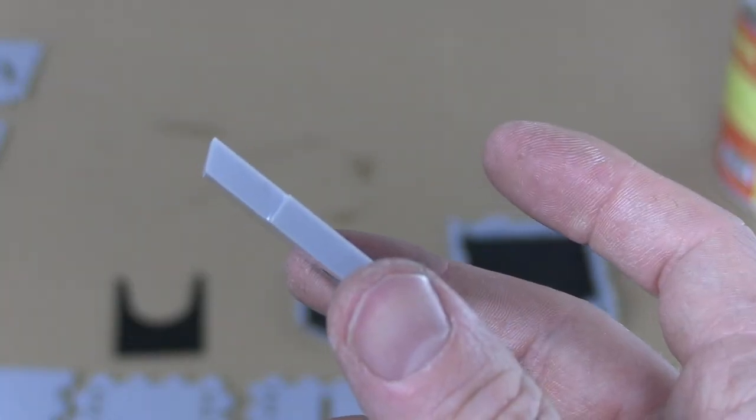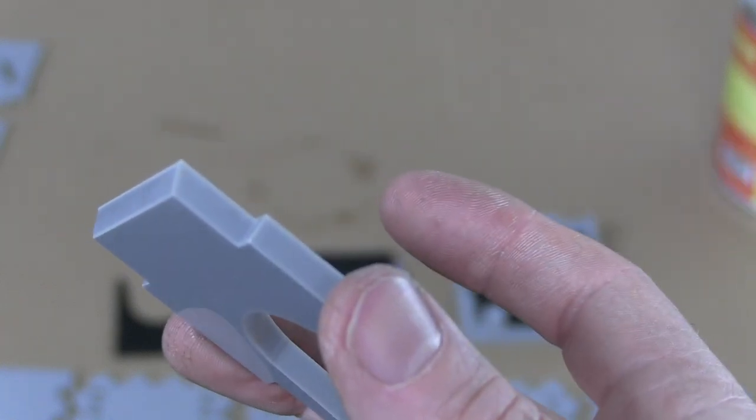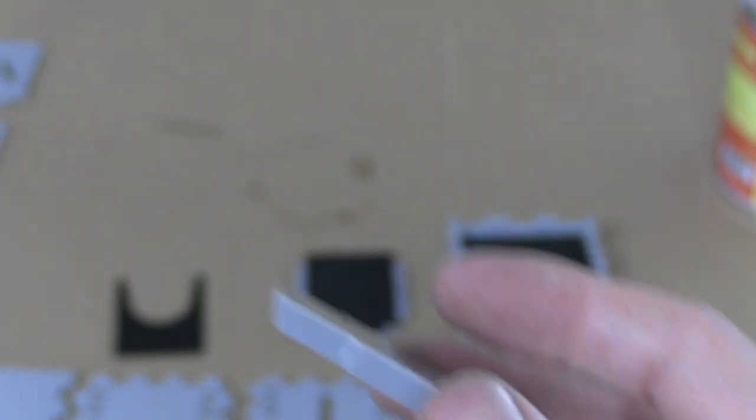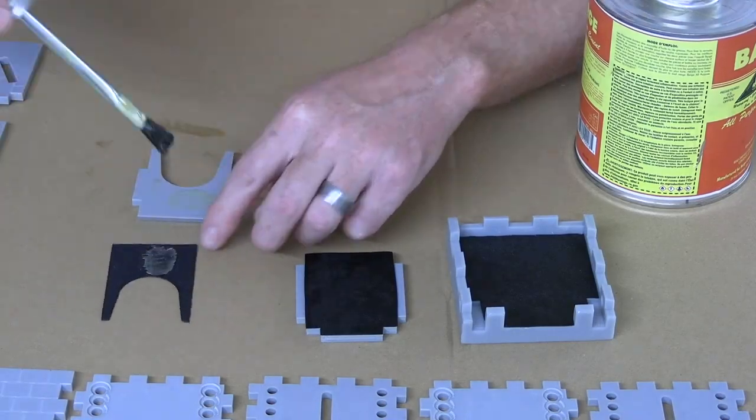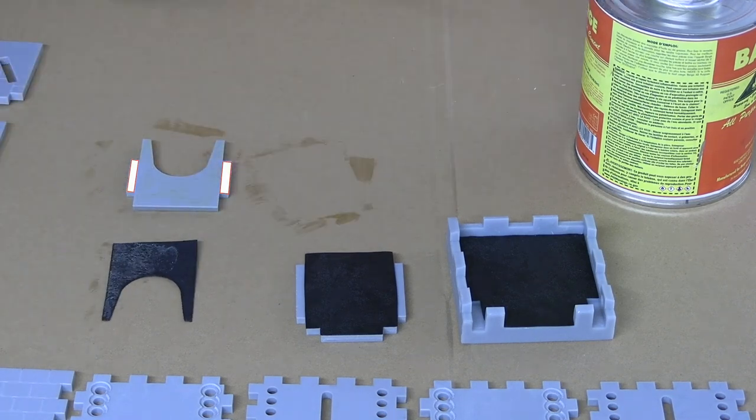Now, unlike the lower ramp, the upper ramp actually has a top and bottom. You can see the angle cut on it here, and the larger of the two surfaces is the top, which is where we'll be applying the cloth. Similar to the last one, make sure you do not get any adhesive on these two rectangle tabs.